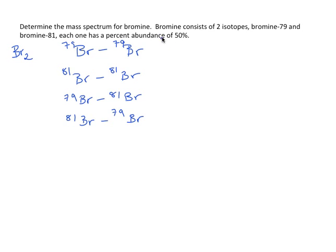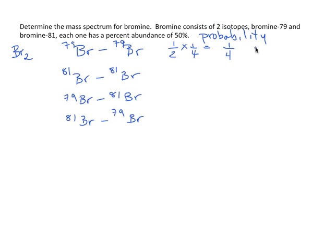So to determine what kind of masses are going to show up on that mass spec, we have to look at the probabilities of these different molecules. If the 79 atomic mass unit isotope has an abundance of 50%, the probability of this being the first atom in the molecule is one half, and the probability of it being the second is also one half. So this is going to be one quarter, and the mass of that Br₂ molecule is 79 plus 79, or 158.